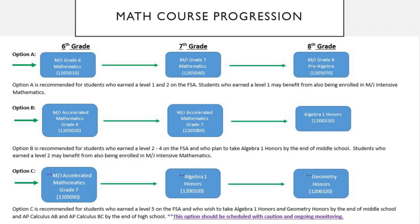Option C is an even more accelerated pathway, which many of our gifted students take. You can take accelerated math or Pre-Algebra in 6th grade, which prepares you for Algebra 1 as a 7th grader and Geometry as an 8th grader. Option C is recommended for students who earned a Level 5 on the FSA because it skips a lot of middle school math content. It's very important to keep in mind that once you start on a pathway, you must continue on that path.